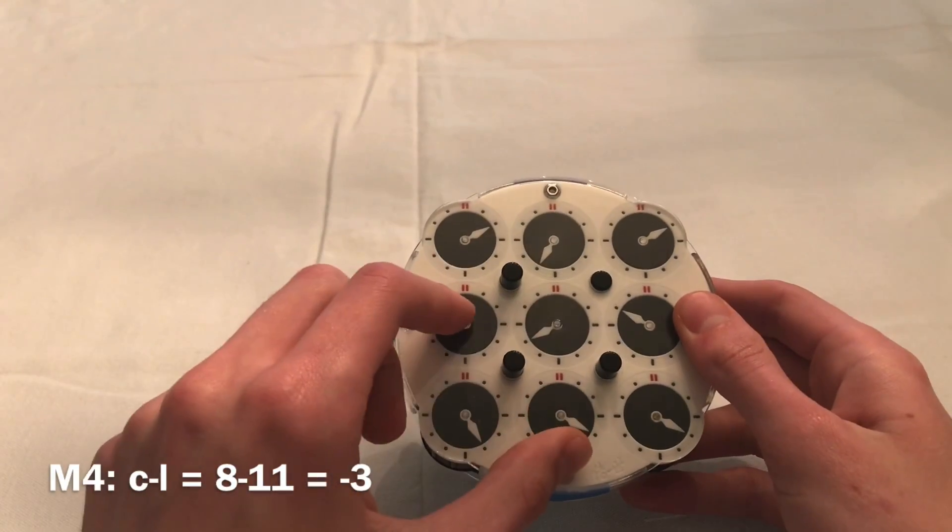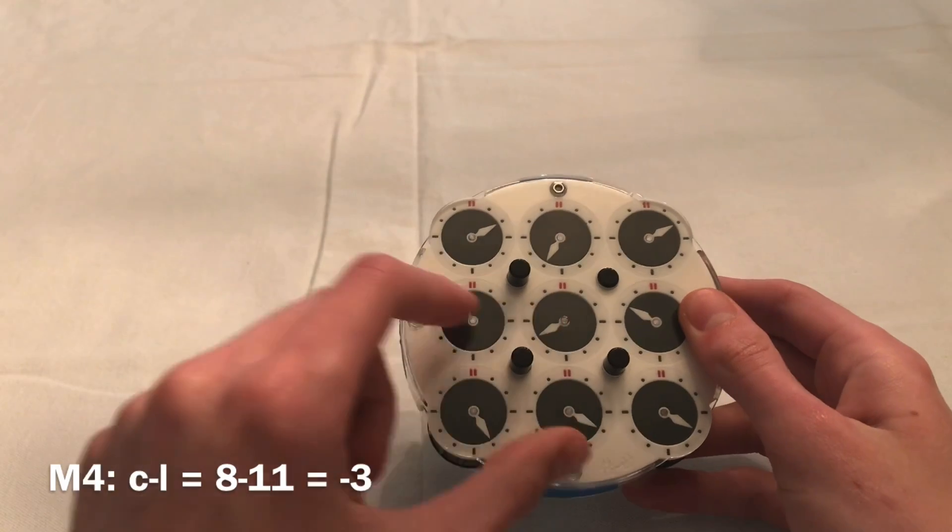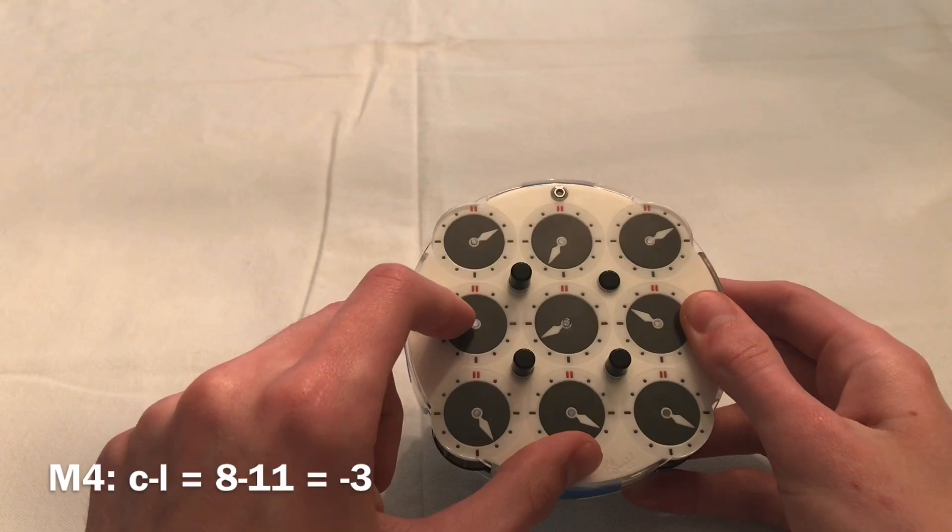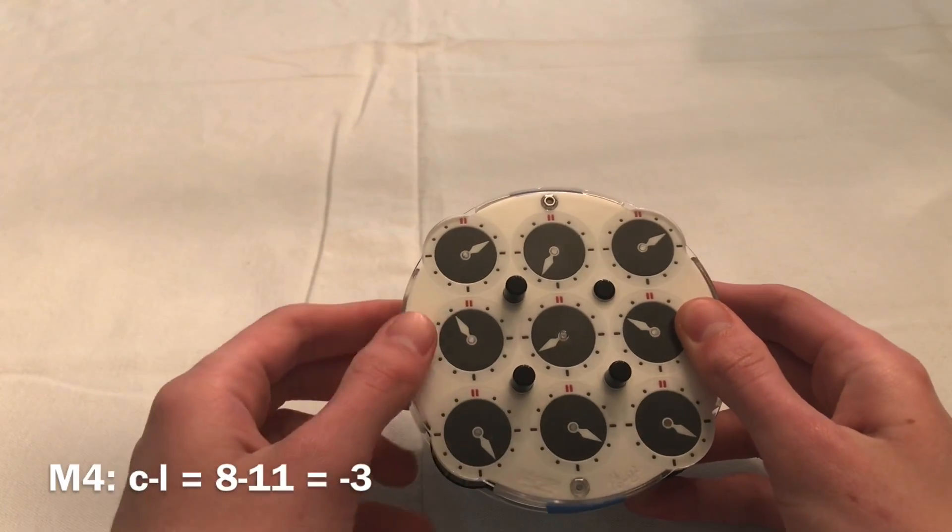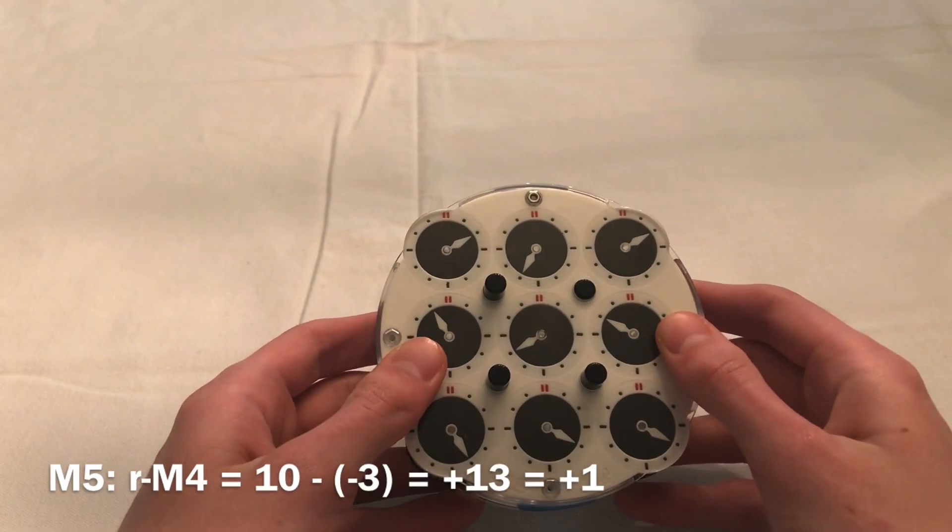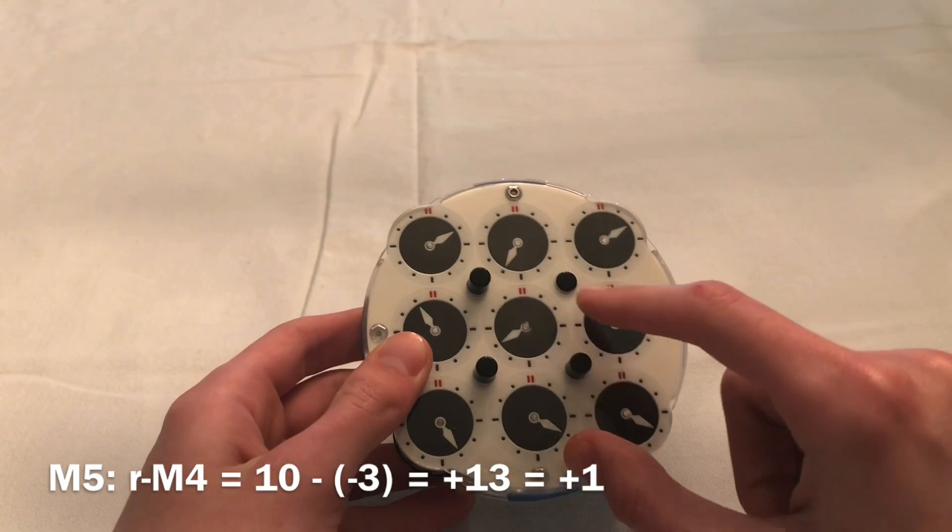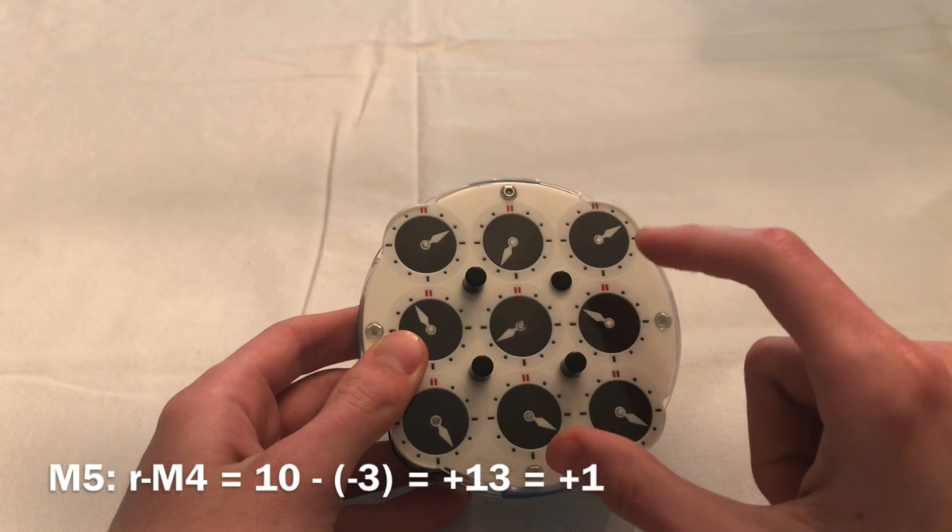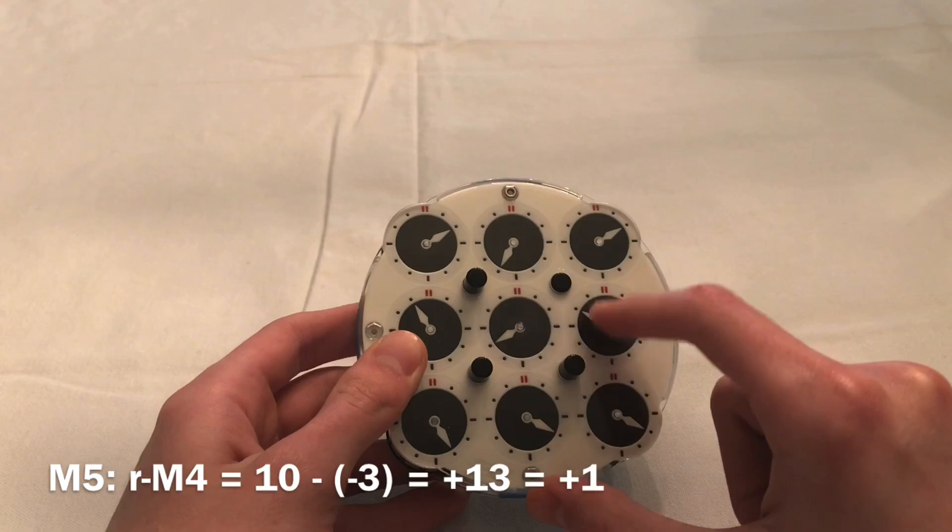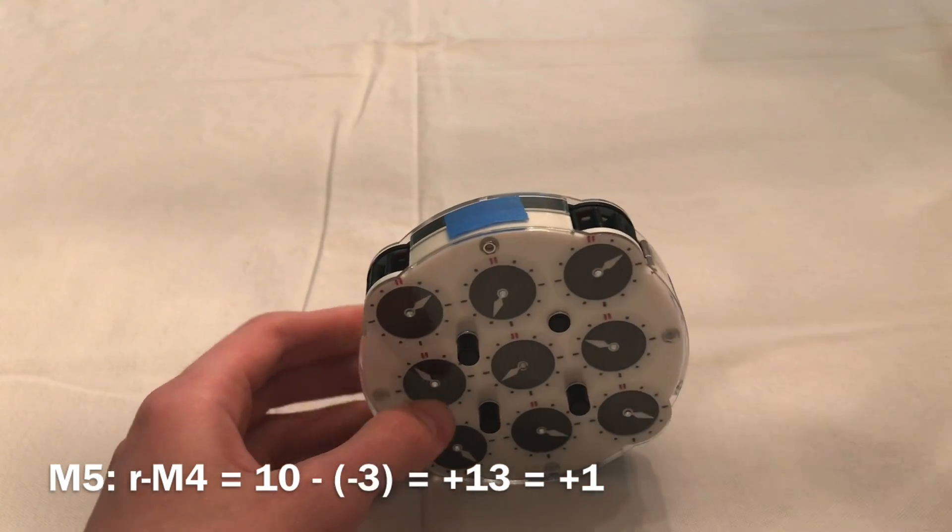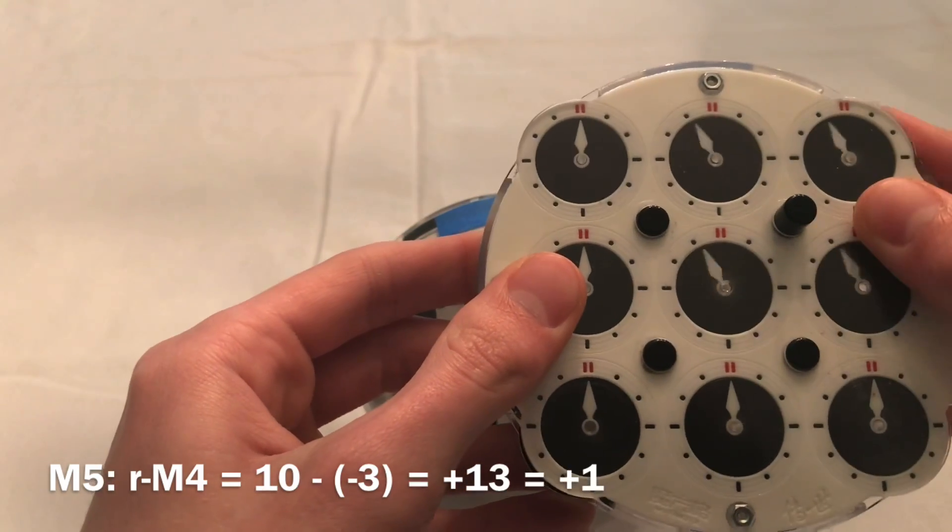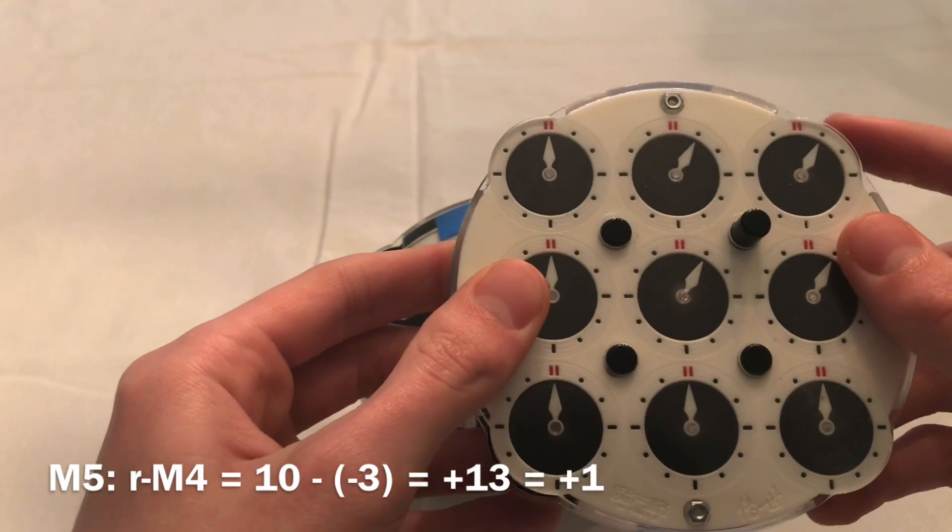Then you calculate M4, C minus L. So 8 minus 11 is equal to negative 3. The final number is M5, which is R minus M4. So that's 10 minus negative 3, which is equal to 13. 13 is equal to 1, because doing a 13 is the same result as doing a 1.